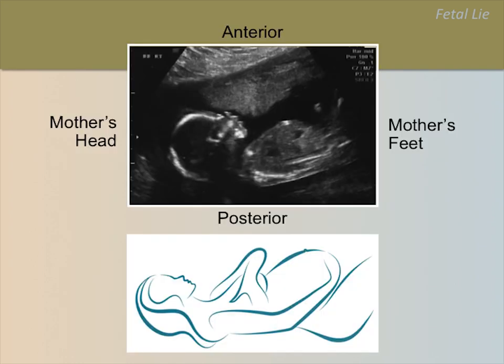This slide emphasizes the orientation of the fetus in relation to the mother during the scan. A breech fetus has its head toward the mother's head and buttocks toward the cervix on a sagittal scan.